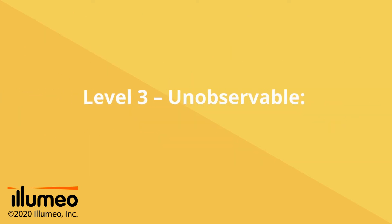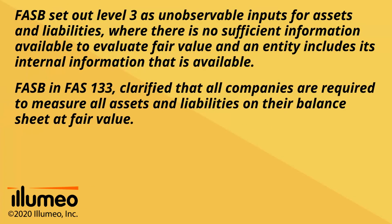Level 3: Unobservable. FASB set out Level 3 as unobservable inputs for assets and liabilities where there is insufficient information available to evaluate fair value, and an entity includes its own internal information that is available. FASB in FAS 133 clarified that all companies are required to measure all assets and liabilities on their balance sheet at fair value.